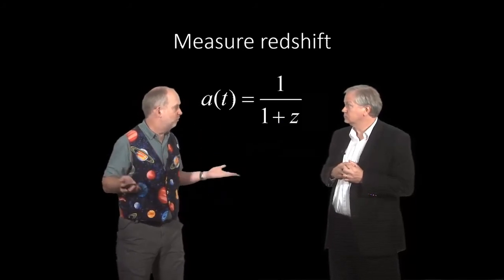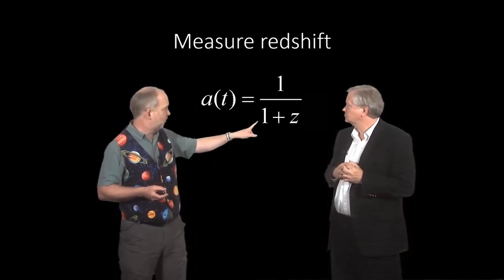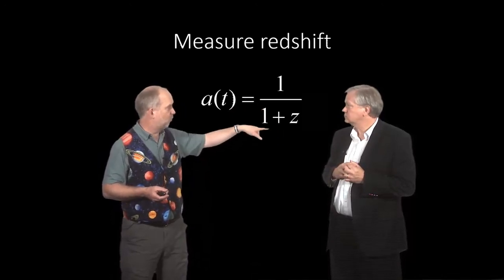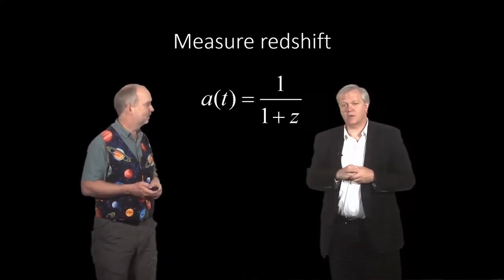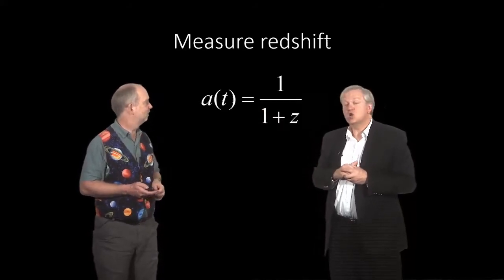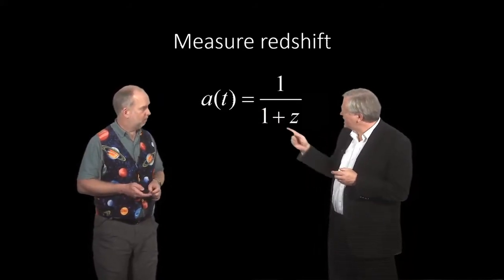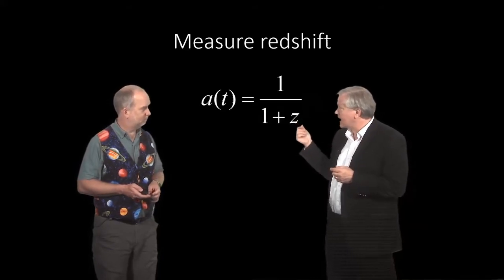It turns out that the scale factor when it was emitted is going to be less than it was now because it's getting bigger. So this is always going to be less than 1 if you assume the scale factor today is 1. And how much less is given by 1 plus the redshift. So if you see a supernova at redshift a half, that means it's going to be 1 over 1 plus a half. So 1 over 1.5. What's that, about 0.7 or something? Yeah, 2 thirds. And so that means the scale factor of the universe is 2 thirds of what it is today.